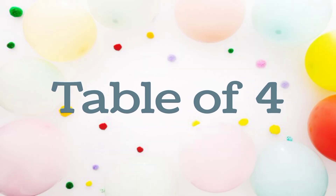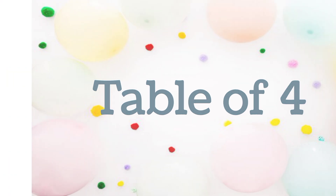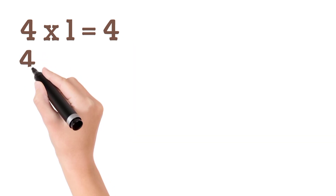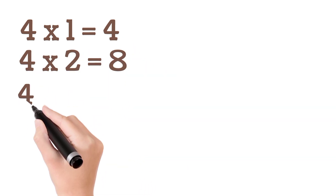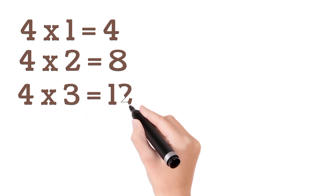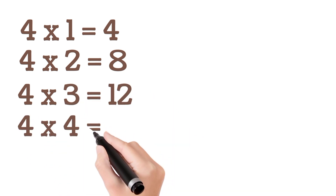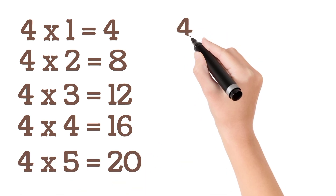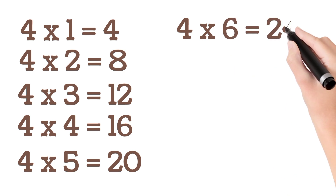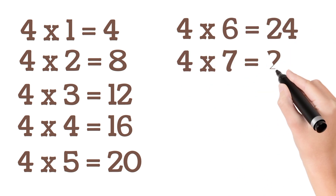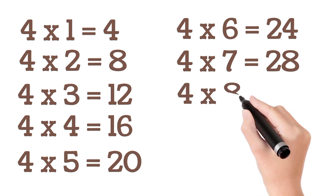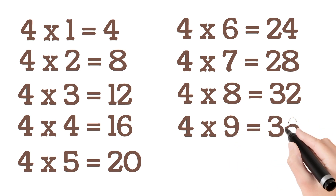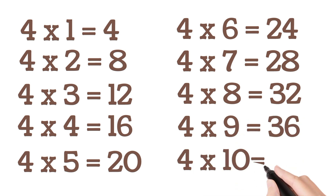Table of Four. Four One's a Four. Four Two's a Eight. Four Three's a Twelve. Four Four's a Sixteen. Four Five's a Twenty. Four Six's a Twenty Four. Four Seven's a Twenty Eight. Four Eight's a Thirty Two. Four Nine's a Thirty Six. Four Ten's a Forty.